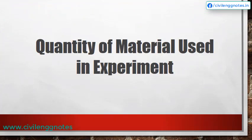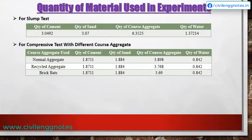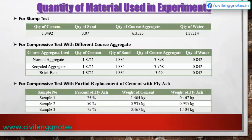Quantity of material used in the experiment: We used specific quantities of cement, sand, coarse aggregates, and water for the slump test and compressive test with normal aggregates, recycled aggregates, and brick bats. For the partial replacement of cement with fly ash, we replaced the cement content by 25%, 50%, and 75% in three different samples.